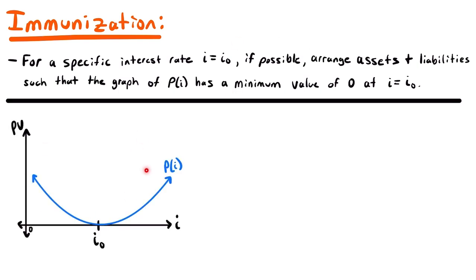Here I have a graph where the horizontal axis represents the value of the interest rate i, and the vertical axis represents the present value of a set of cash flows including assets and liabilities. The net present value function capital P of i reaches a value of zero at the specific interest rate i-naught, and in particular that value of zero is a minimum on this function. Around that interest rate, if we move in either direction, the present value becomes greater than zero.